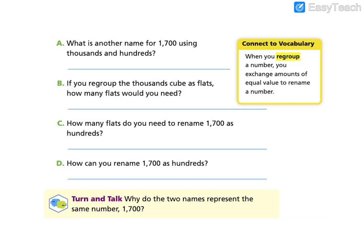It says, what is another name for 1,700 using thousands and hundreds? So it's looking for us to take that example like we did and we broke it into expanded form. How do we rename this number 1,700 using thousands and hundreds? We can rename it as 1 thousand, 7 hundreds.